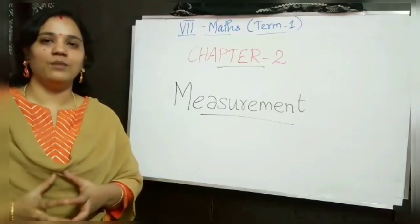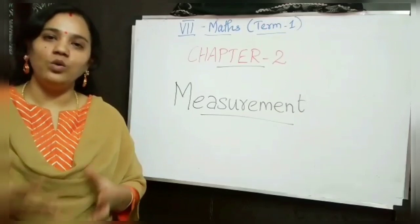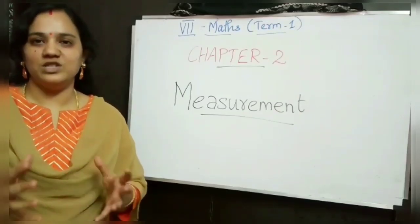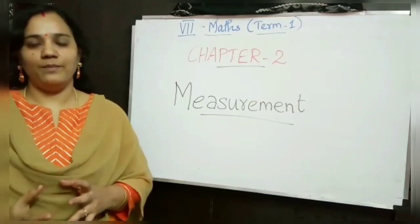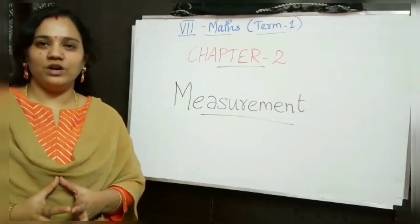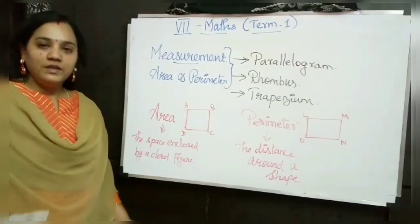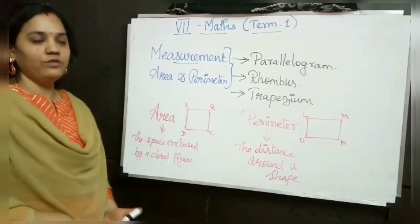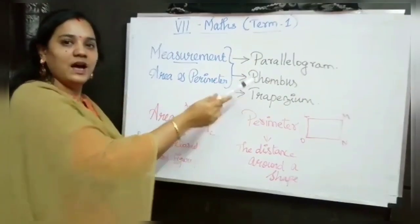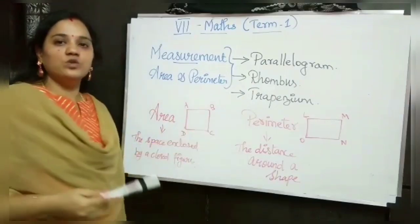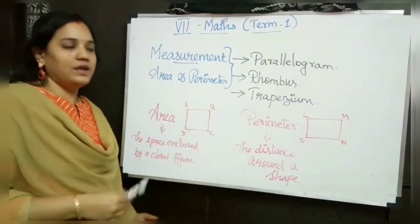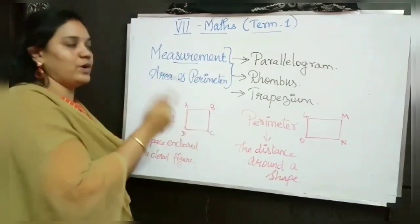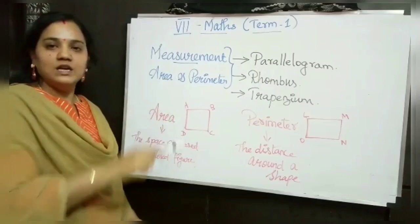We are going to learn about these shapes and find out the area of parallelogram, rhombus and trapezium. In this chapter we are going to learn the area and perimeter of parallelogram, rhombus and trapezium with suitable examples. Likewise, we are going to learn the perimeter of these shapes also.